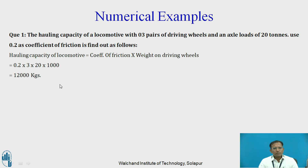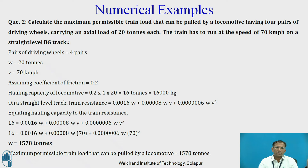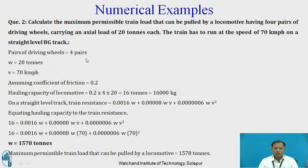In the second example, 4 pairs of driving wheels are given, axle load is 20 tons, and speed is 70 kmph on a straight level BG track. When you say straight level BG track, you have to consider the equation that is independent of speed, dependent on speed, and atmospheric resistance. The hauling capacity is calculated as friction multiplied by number of pairs of wheels and axle load on driving wheels, which comes to 16 tons or 16,000 kg.